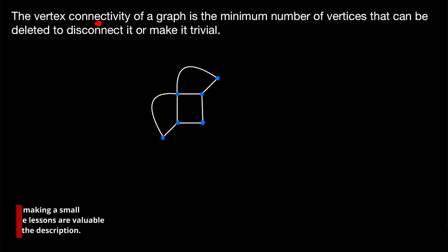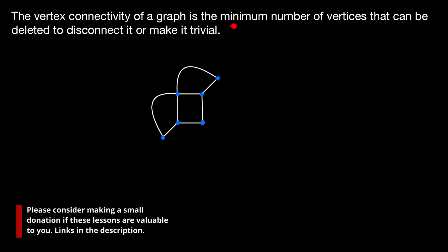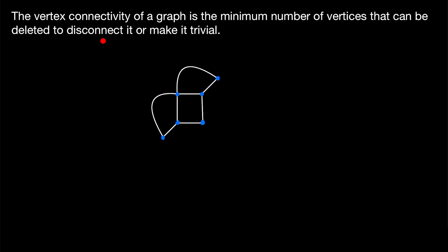Recall that the vertex connectivity of a graph is the minimum number of vertices that can be deleted to disconnect it or make it trivial. By 'make it trivial,' we mean reduce it to a single vertex. If you need a more thorough recap of the definition of vertex connectivity, there will be a link to that lesson in the description. The last point about making the graph trivial is just there to account for complete graphs.